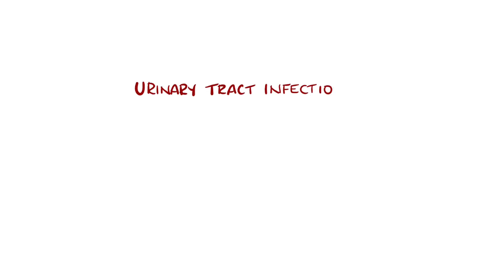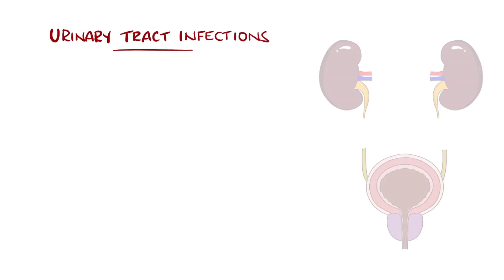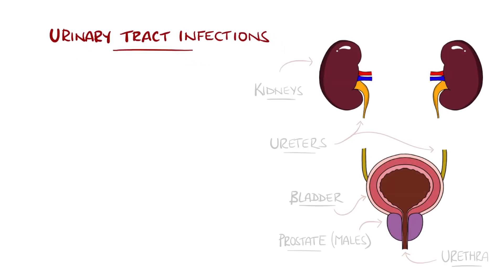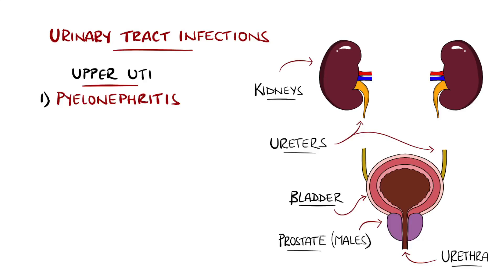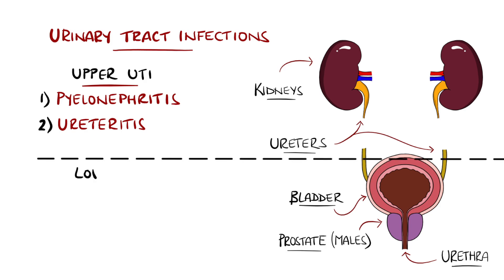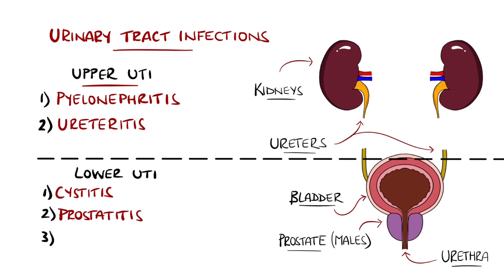A urinary tract infection, commonly known as a UTI, is an umbrella term that refers to an infection of a part of the urinary system. Broadly, UTI is divided into upper and lower UTI. Upper includes pyelonephritis, an infection of the kidney, and ureteritis, an infection of the ureters. Lower UTI includes the bladder, known as cystitis, the prostate, and the urethra, known as prostatitis and urethritis respectively.